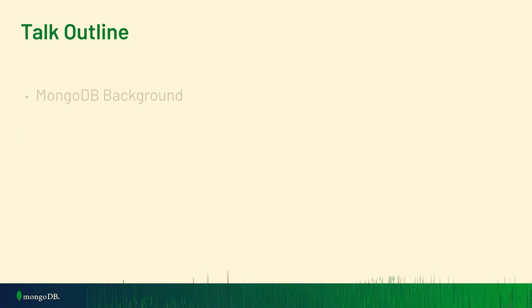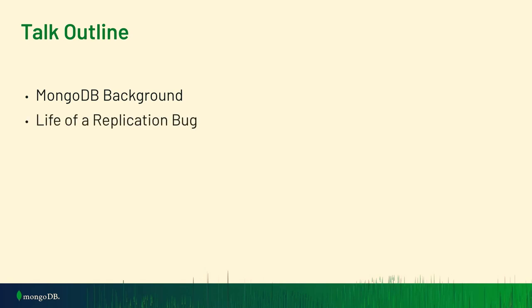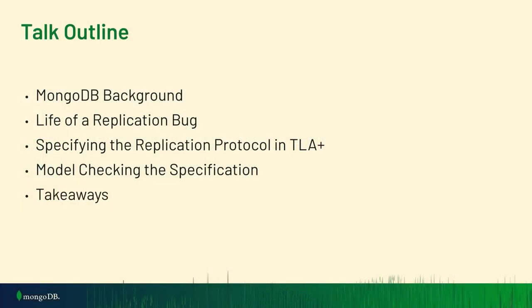To start, I'll give a brief outline of what I'm going to talk about. I'll start with background on what MongoDB is and how the replication protocol works at a high level. Then I'm going to go through a series of bugs found over around two or three years. Then I'll talk about how we specified our protocol in TLA+ and how we model check the specification. And finally, takeaways from our experiences using TLA+ and the model checker.